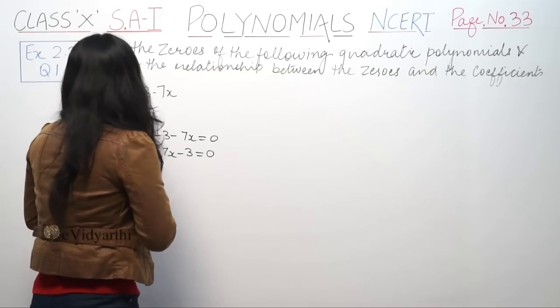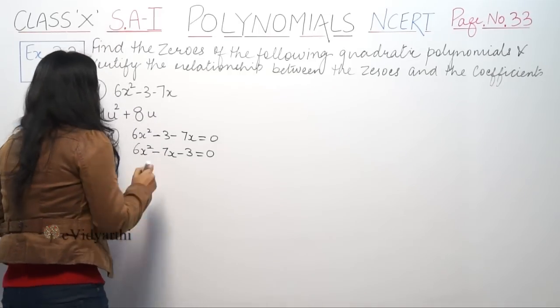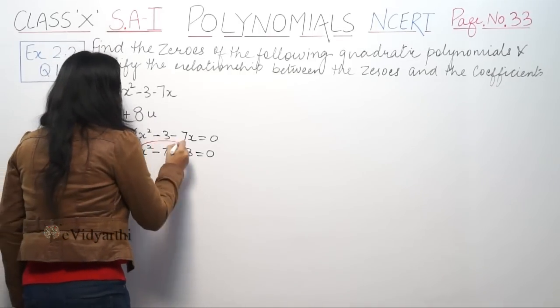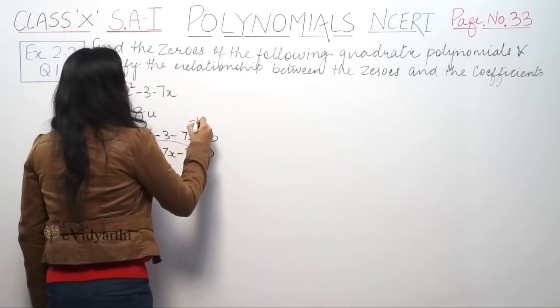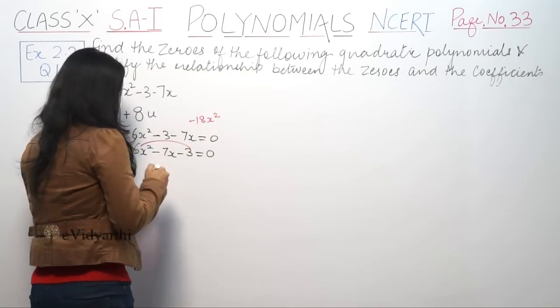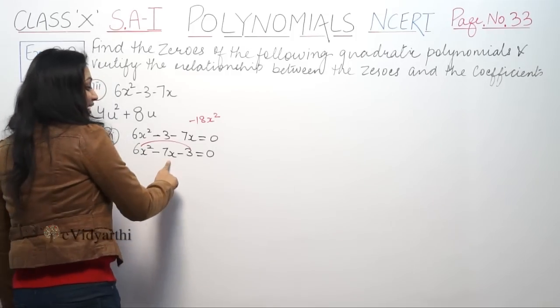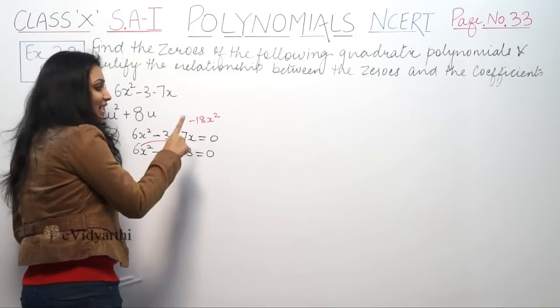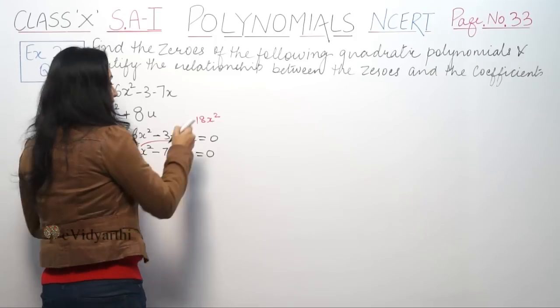Now, to split the middle term, we multiply both the leading coefficient and the constant: 6 times 3 gives us 18. We need two numbers that multiply to 18 and add to 7. So 9 times 2 is 18, and 9 minus 2 is 7.